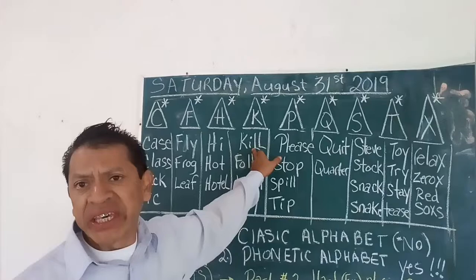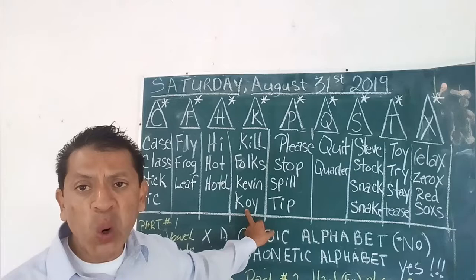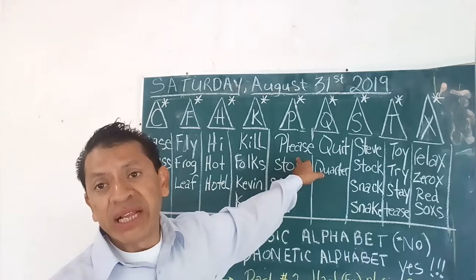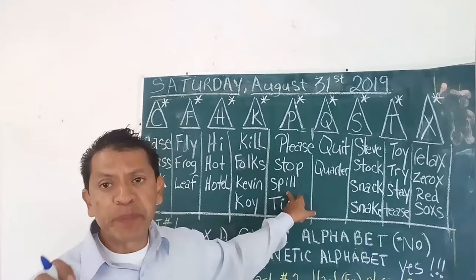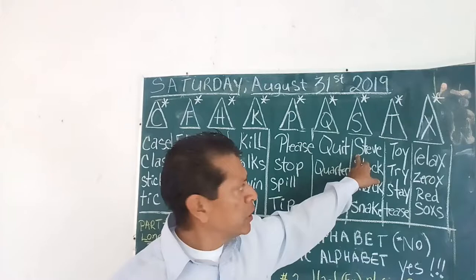K — Kill. Folks — folks is gente or amigos. Kevin, Coy. Please. Stop. Spill, Tip. Quit. Quarter, Quarter.